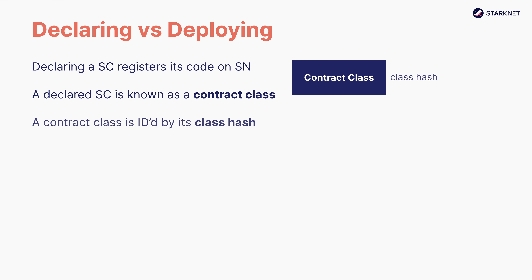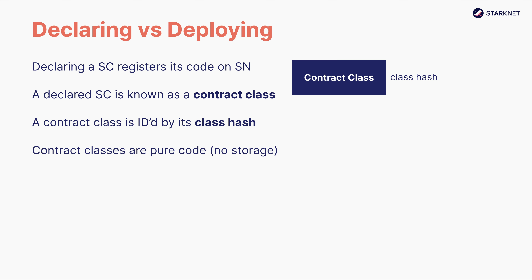A contract class is identified by its class hash. This identifier is the hash of the Sierra code of your smart contract. When deploying an instance, you need to specify which contract class to use as a blueprint, and you specify it by providing its class hash. Contract classes are pure code — they don't have storage.